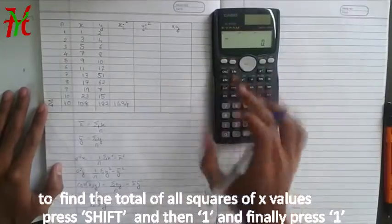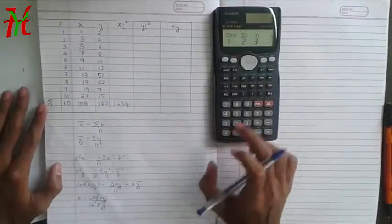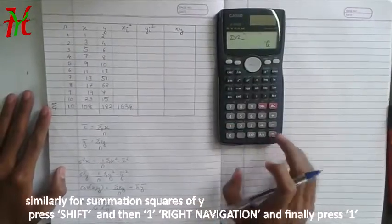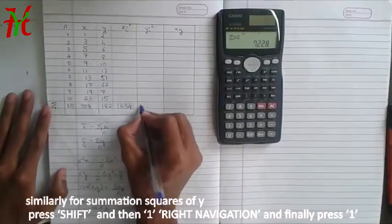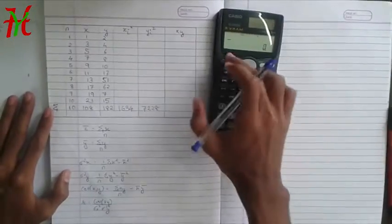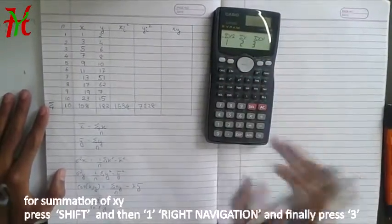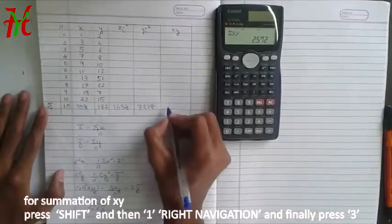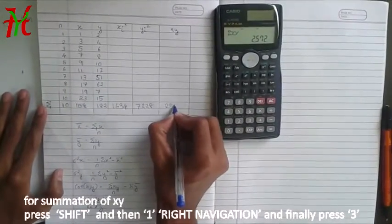And then again for summation Y now 1 and then right navigation button and then 1 again. Summation Y square is equal to 7228. And then for summation of X, Y, shift 1, right navigation, you can see summation X, Y written here 3 equal to 2572.